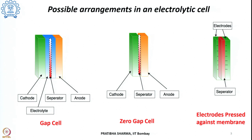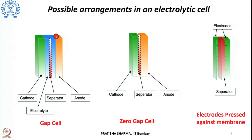These components can be connected in different possible arrangements. There are three such concepts for arranging these components in an electrolytic cell. The first concept is a gap cell, in which there is a gap between the separator and the two electrodes. This is the simplest and most conventional arrangement, where the distance between the electrode and the separator is kept small to lower the ohmic resistances across the electrolytic cell.